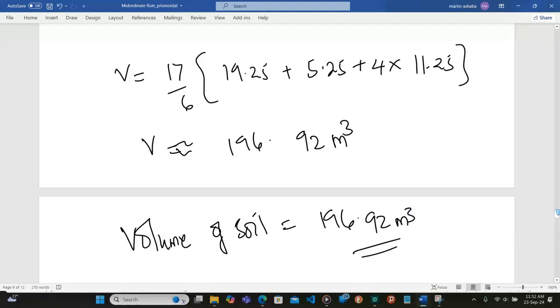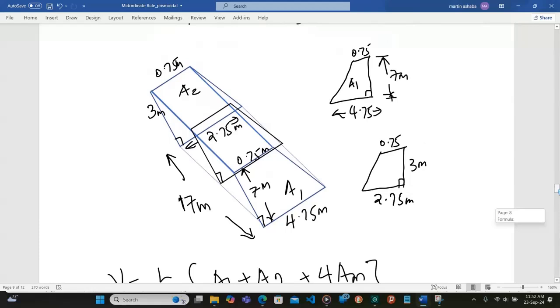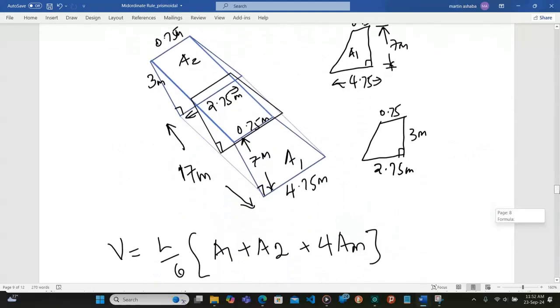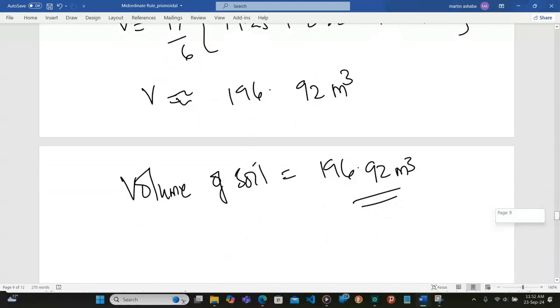That is how we can use the prismoid formula to determine the volume of soil or earth material that we can fill on an embankment or cut away in a trapezoidal channel section, or like in this example, what we can use to fill this trough. Thank you.